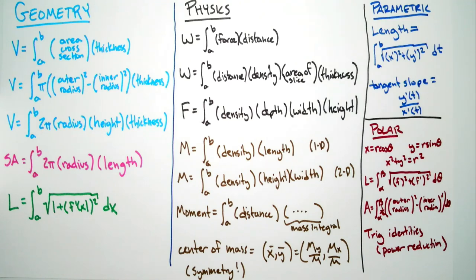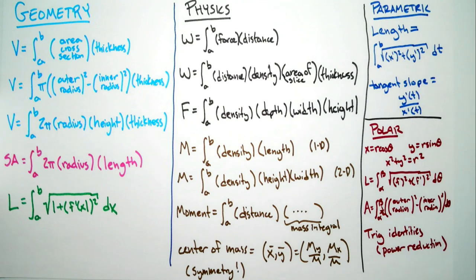A lot of emails, which is good. The first email asked to throw up all the formulas we need to know. It's not so bad — I fit it on a page. There are basically three categories: geometry, physics, and coordinates.